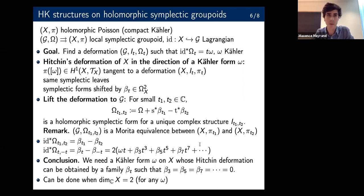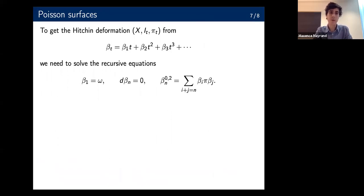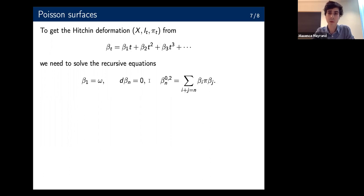Let me explain how we do that on the Poisson surface. This family of two-forms has to satisfy some nonlinear constraints, which we can express in terms of recursive equations. If you expand beta as a power series in t, the equations to solve are: the first term is just the Kähler form we started with; each nth term must be closed; and the (0,2)-part of the nth term is a particular combination of the previous terms. This part is not necessarily closed, so we have to add a (1,1)-part to close it. It's not too difficult to show we can always solve this using Hodge theory, but we want a particular solution where the odd terms are all zero except the first.